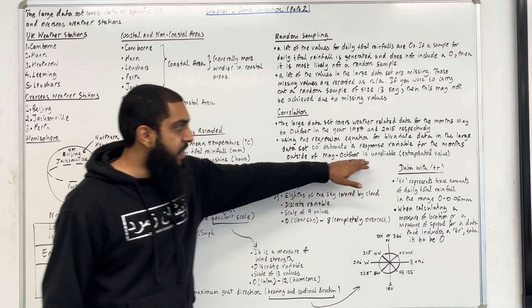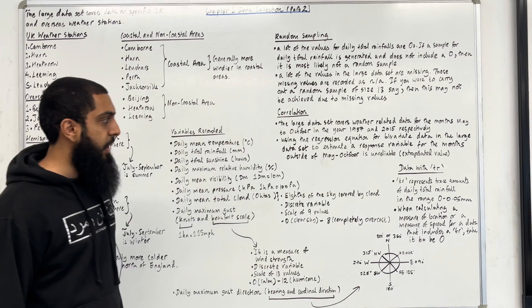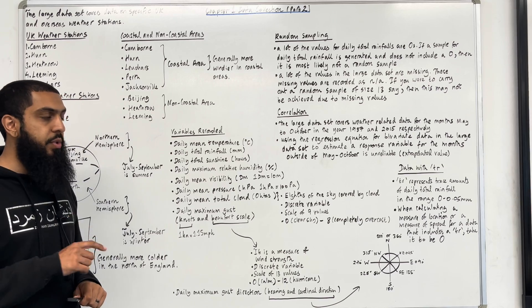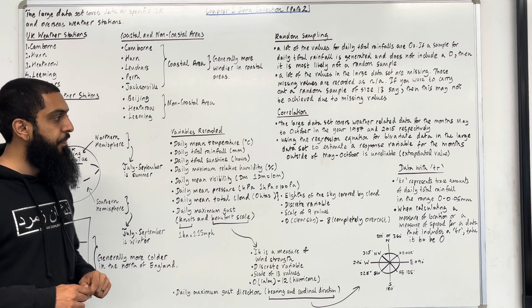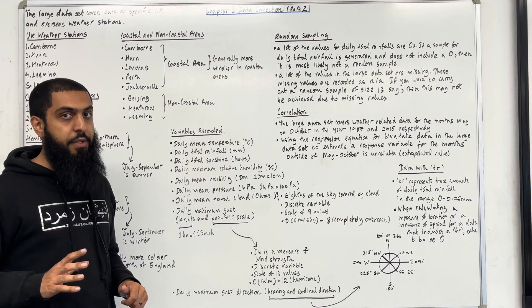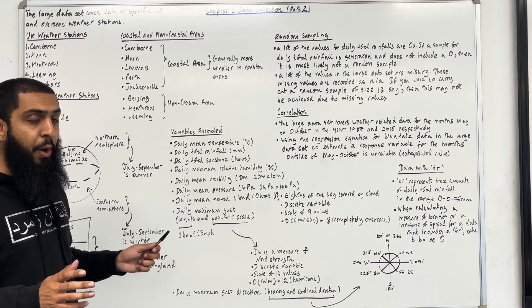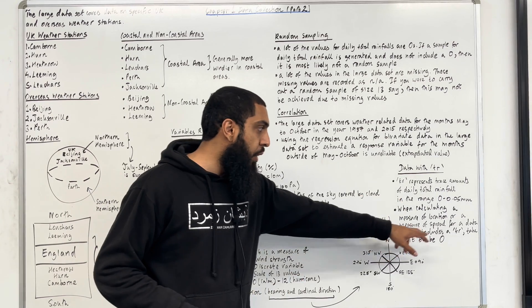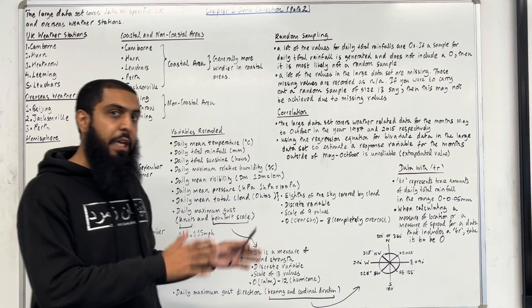Finally, data with TR. What does that represent? TR represents trace amounts of daily total rainfall in the range 0 to 0.05 millimeters. When calculating a measure of location or a measure of spread for data that includes a TR, you just take the TR to be 0.